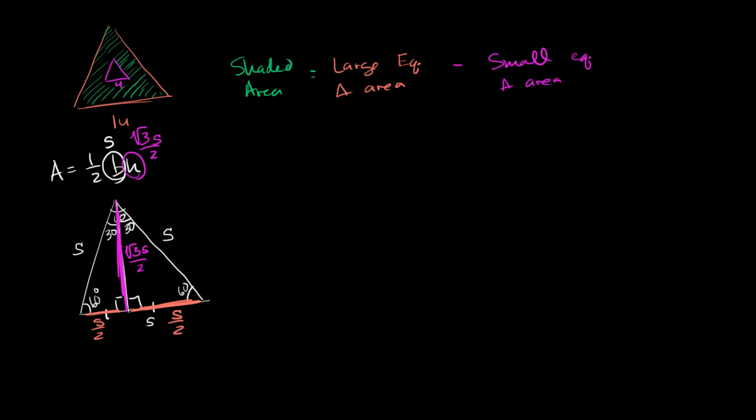And so this will simplify to, let's see, we have in the numerator, we have a square root of 3 s squared over 4. And now we can apply this to figure out the areas of each of these triangles.